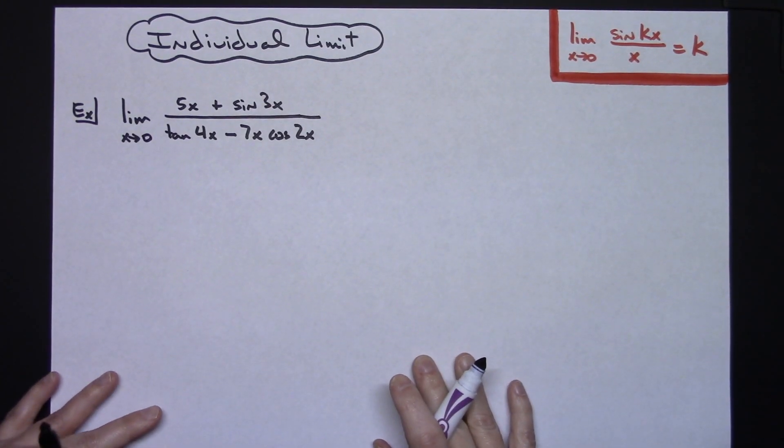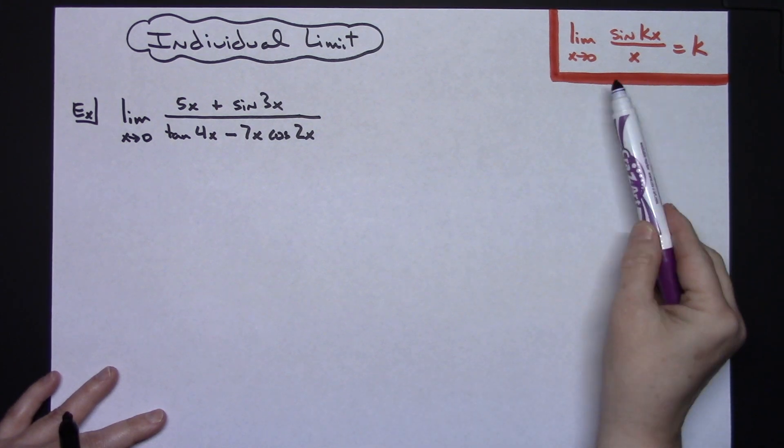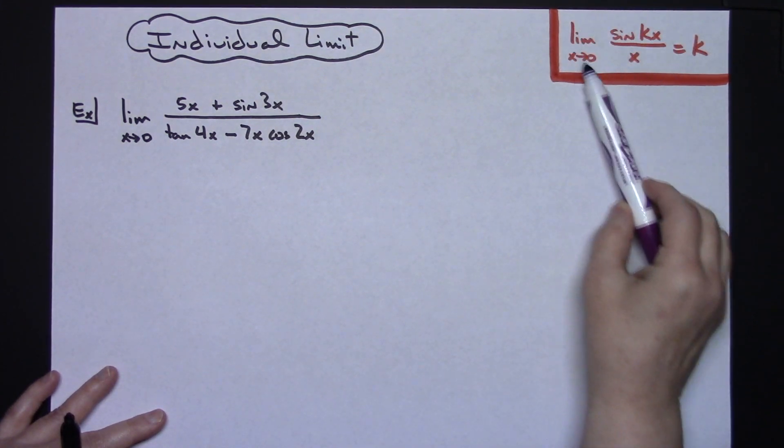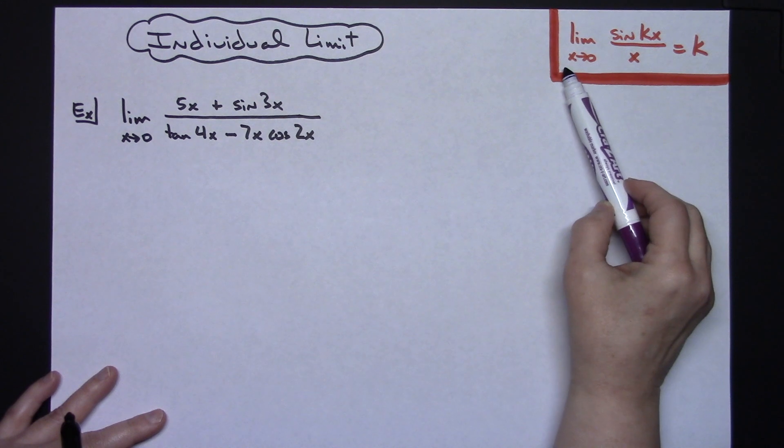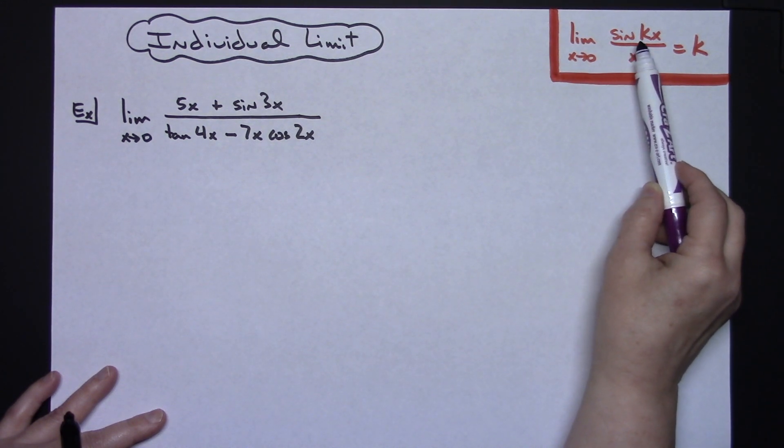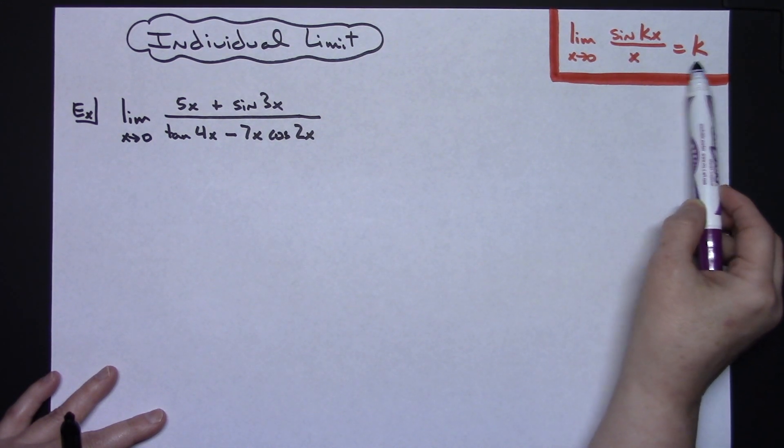In this video I'm going to be working out an individual limit. I am going to, in my algebra steps, use the fact that the limit as x approaches 0 of sine kx over x is going to be k.